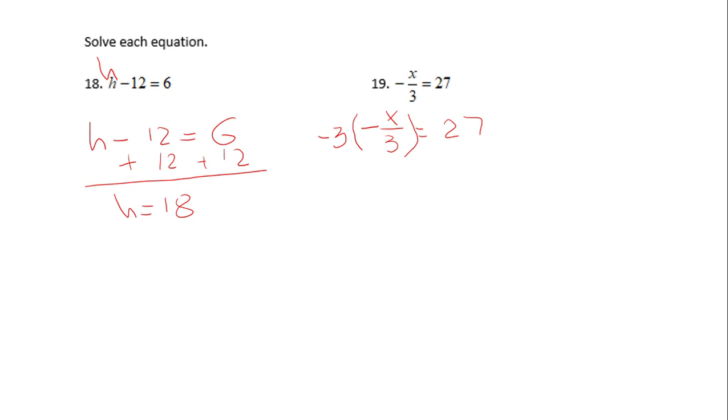If I multiply the left side by negative 3, guess what? I'm gonna do the same thing for the right side. This is a very important principle in solving equations: whatever you do on one side, you have to do on the other side. These two guys cancel out. We end up with x. The two negatives cancel out also. Here we have 27 times negative 3, and that is negative 81.